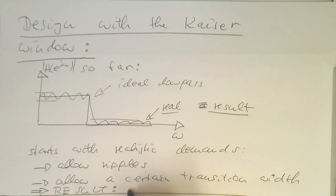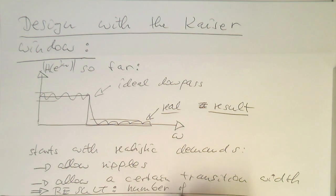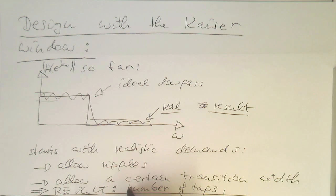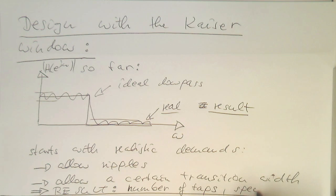As a result of squeezing these parameters, we are getting our number of taps and we are also getting a special window function. That's the design principle of the Kaiser window approach.